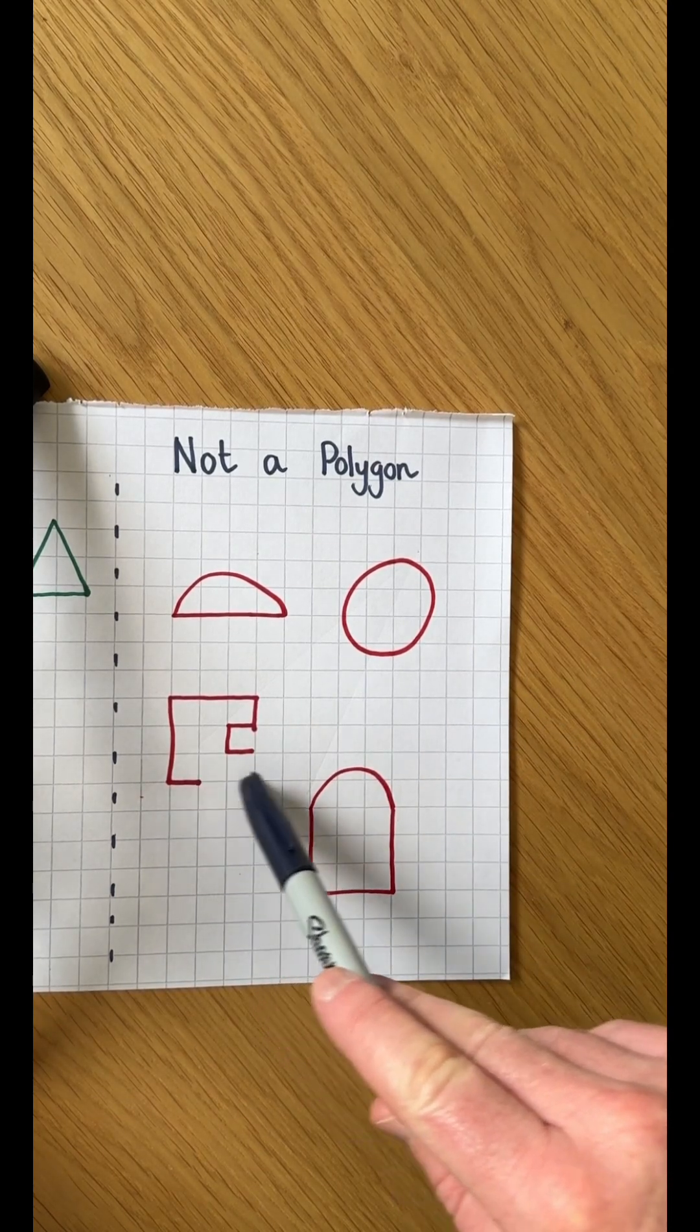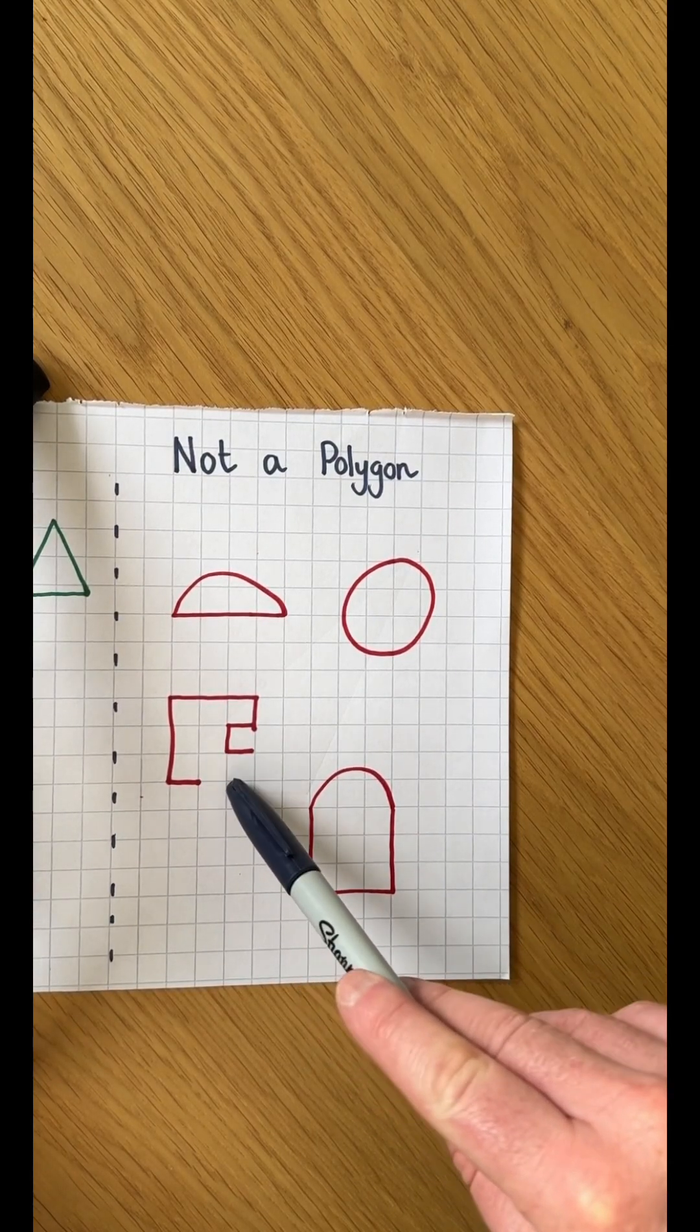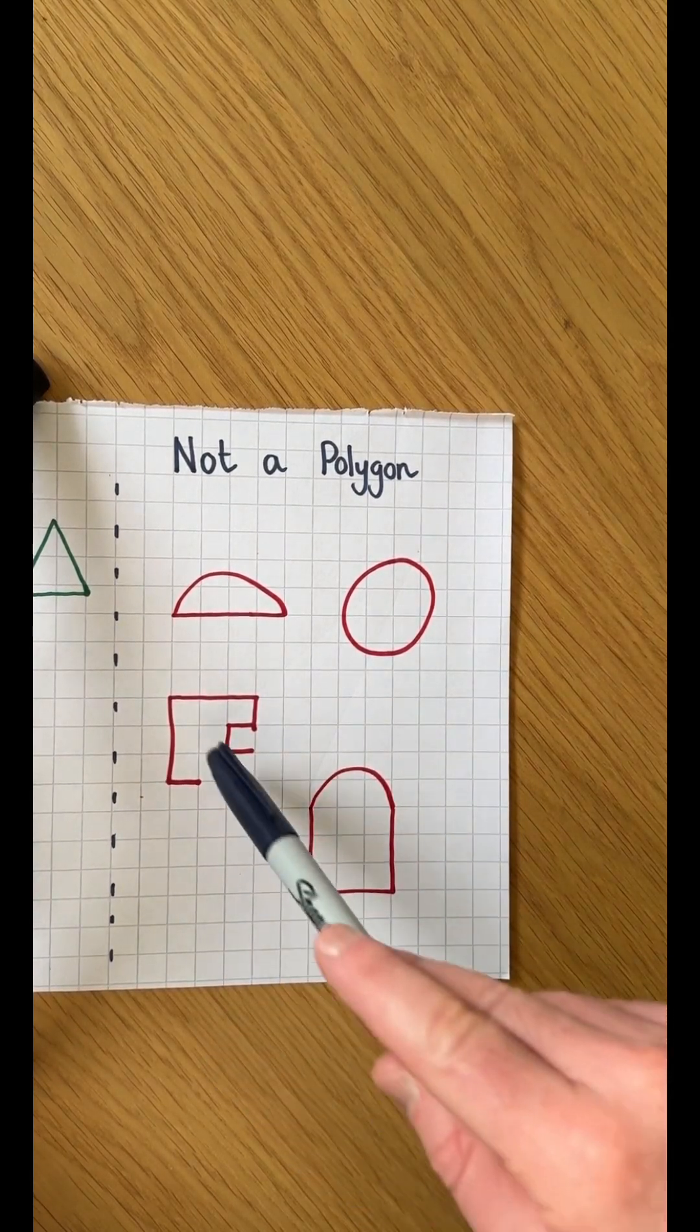A polygon also has to be a closed shape. As you can see, this shape here has a gap and it's not completed. So that is awesome.